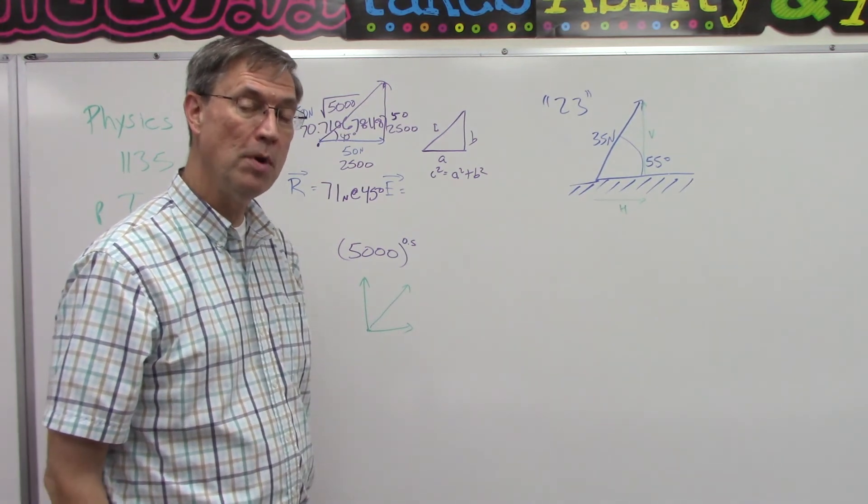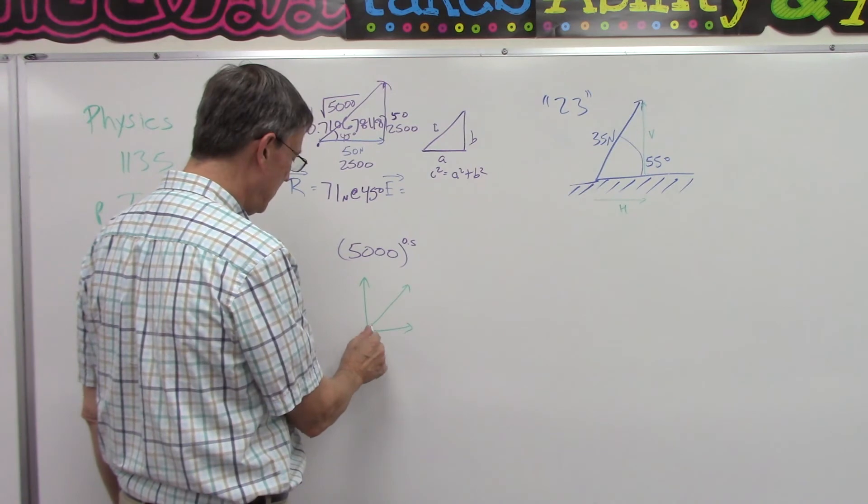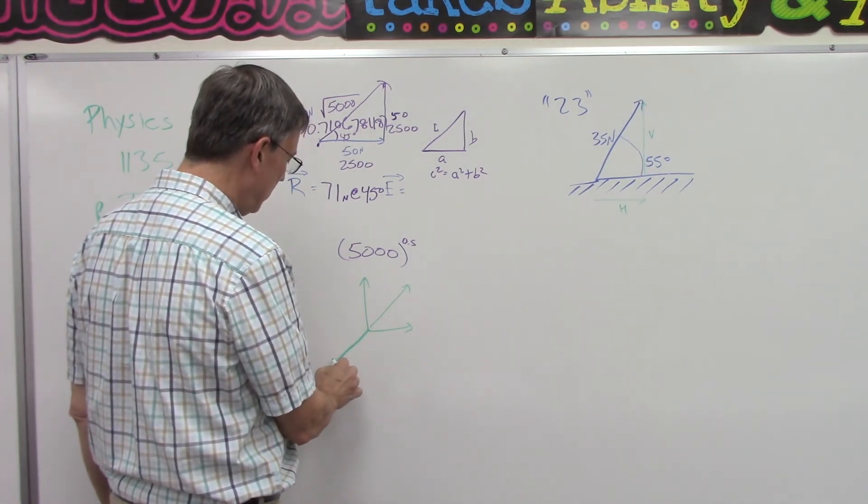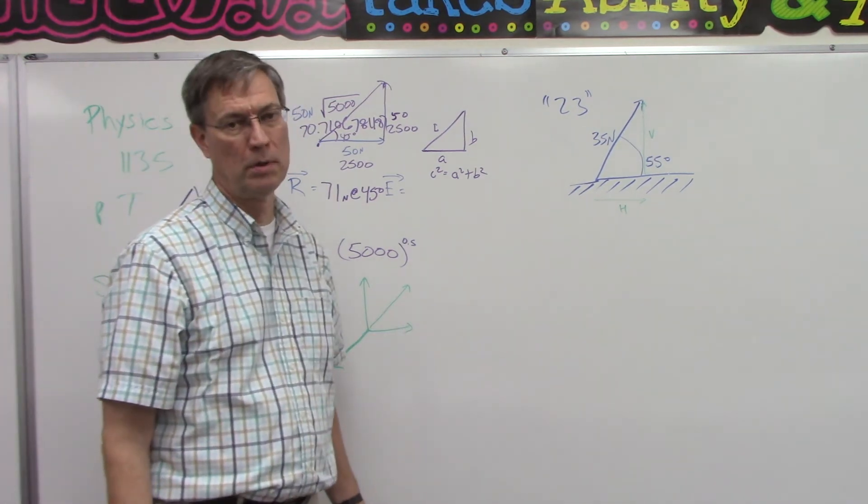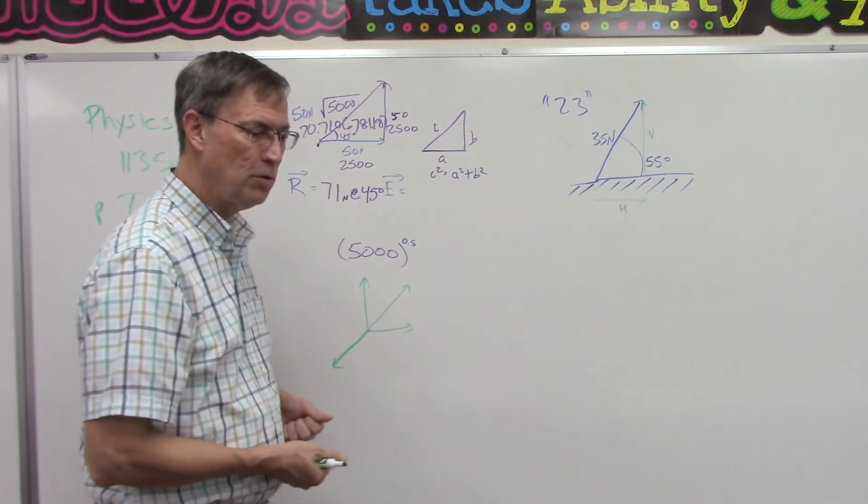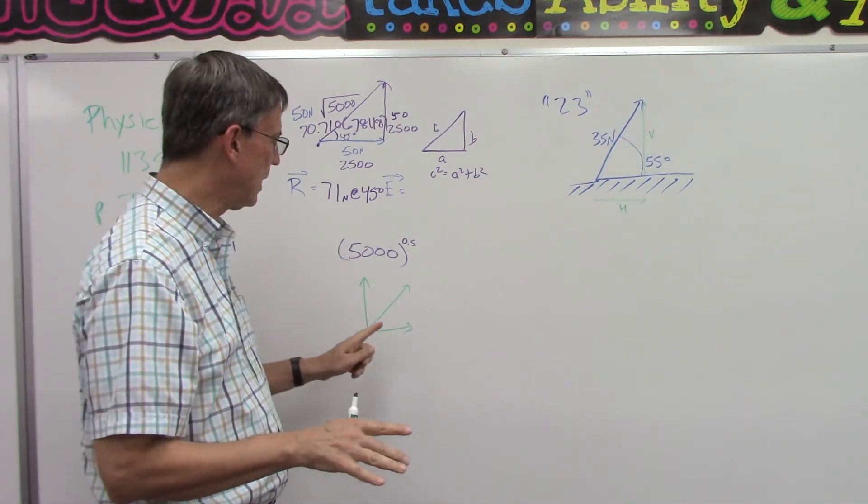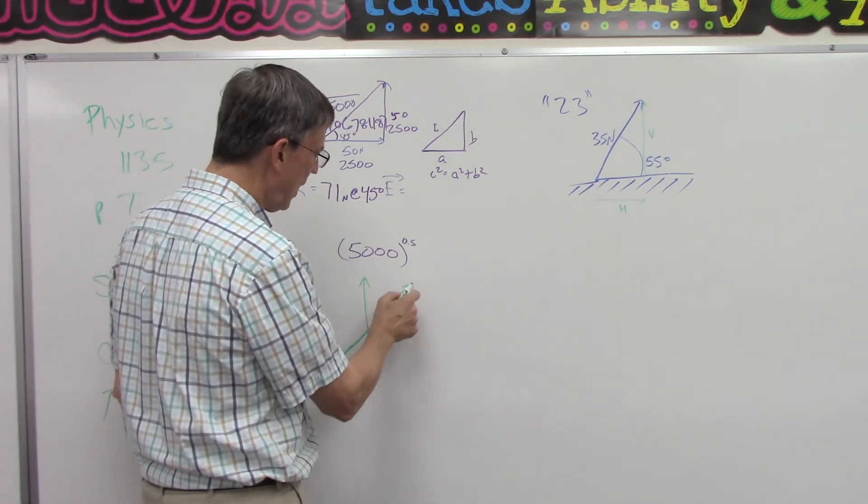The equilibrant would be what force does their dad have to be pulling on it? What force does dad have to be pulling on the sled to keep them from being able to pull it at all? They're both still pulling with an equal force, but the sled isn't moving. That's the equilibrant. So it balances out the resultant.